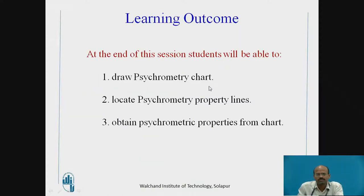The learning outcomes are: at the end of the session, students will be able to draw psychrometric chart, locate psychrometry property lines, and obtain psychrometric properties from chart.